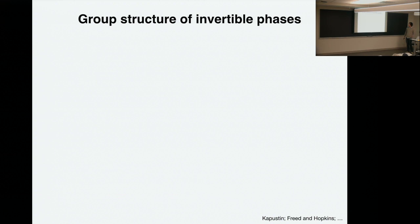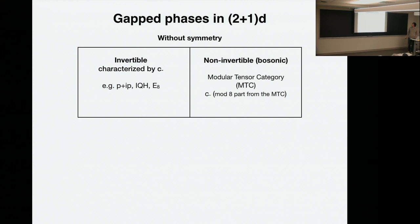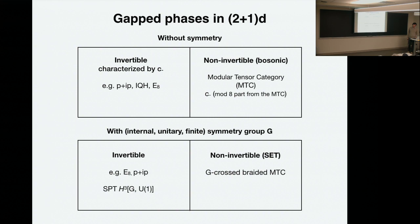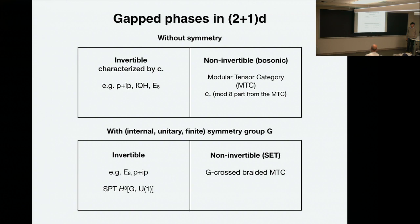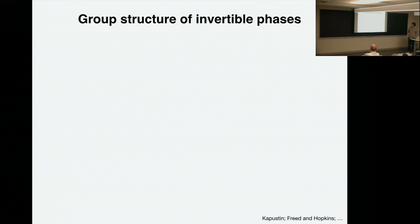Is there any notion of the G-crossed braided modular tensor category? So given a modular tensor category and given a symmetry group G, I can have many different G-crossed modular tensor categories. Is the G-crossed modular tensor category also a modular tensor category? No, it's really a different kind of object. You can further gauge the symmetry and make it a modular tensor category, but it's not necessary. For unitary symmetry you don't need to.